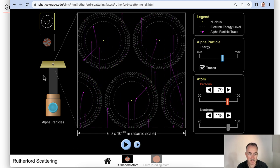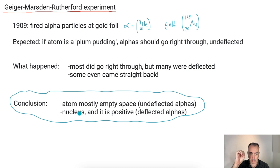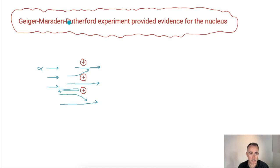So this is one of the great examples of an experiment that shows that our understanding was wrong, it needs to be updated. And that's great, that's what we love when that happens. So the conclusion is the atom is mostly empty space, that's because of the undeflected alphas. But it must have a central hard nucleus that is positive, and the rest of it is mostly empty space. So the Geiger-Marsden-Rutherford experiment provides evidence for the nucleus.